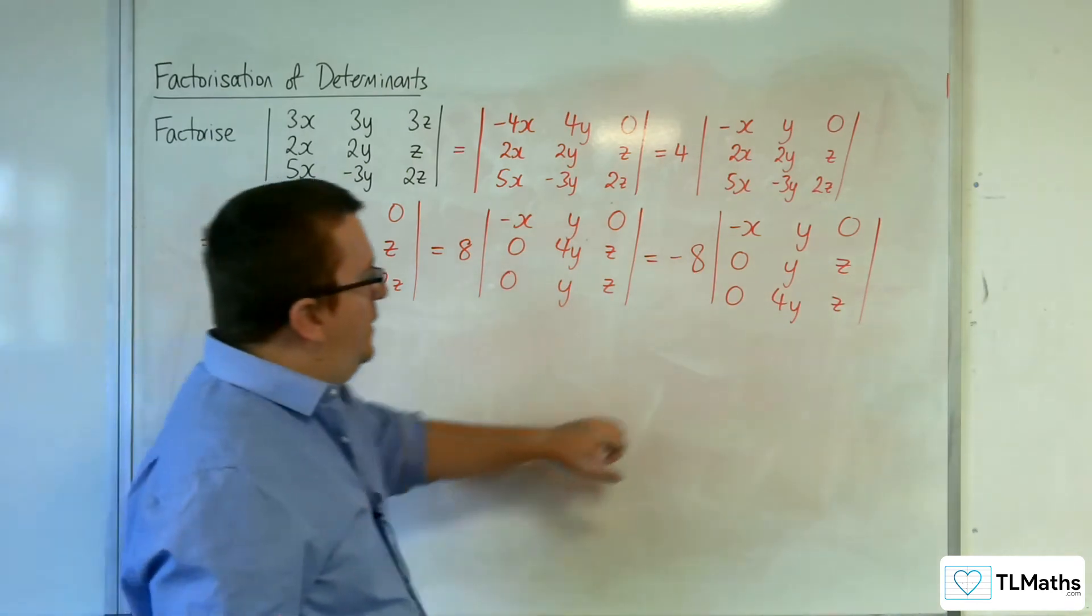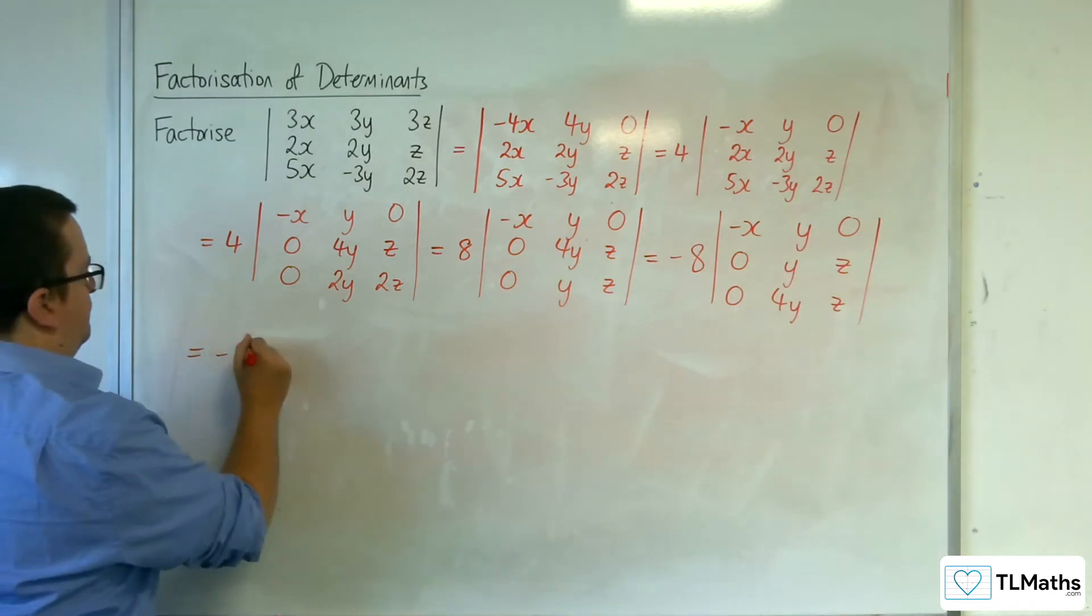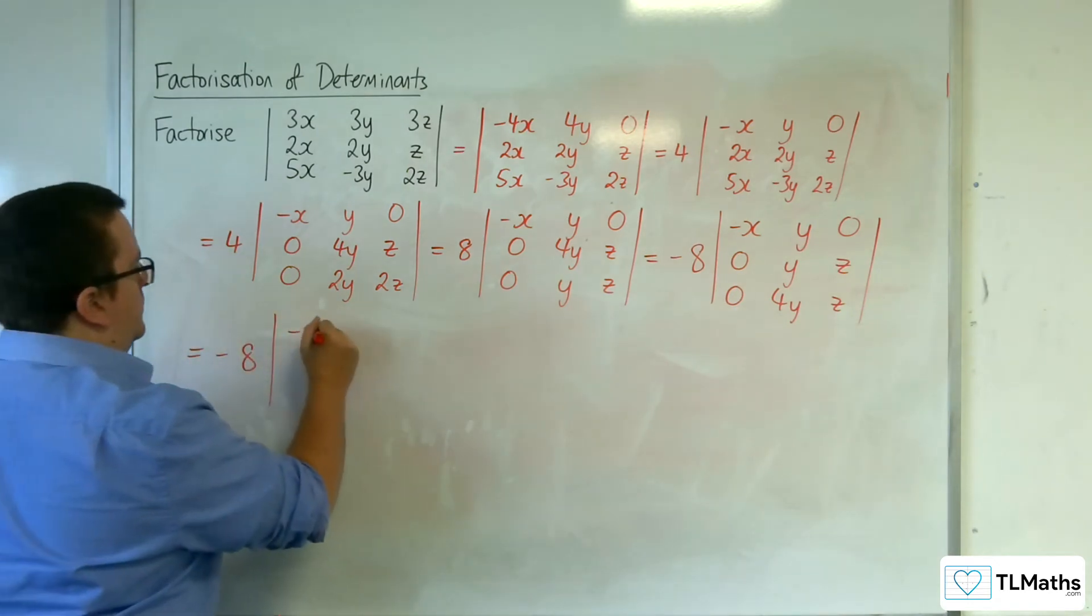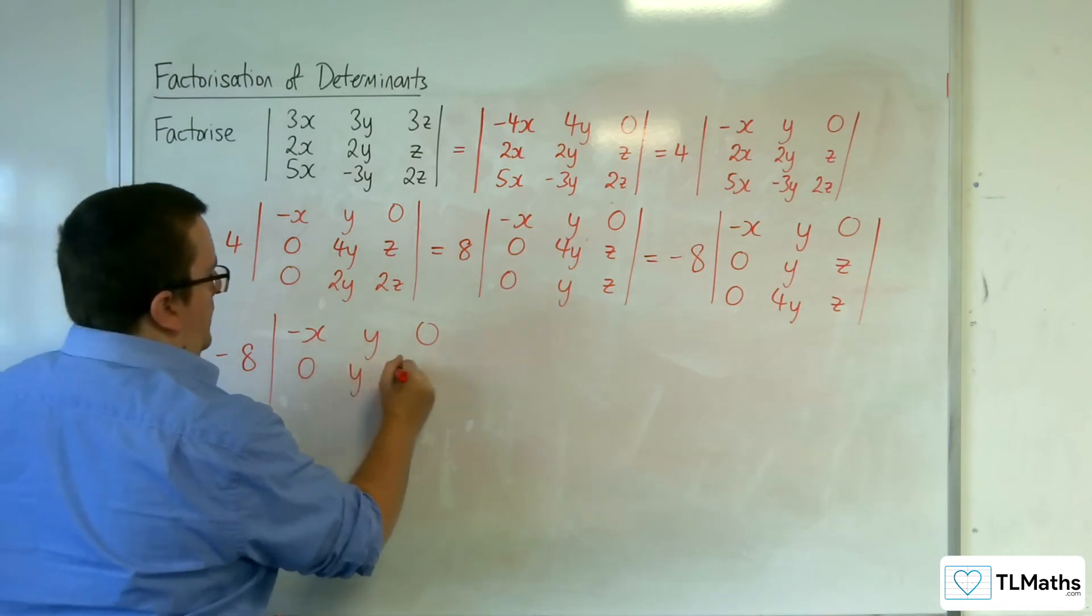Okay, so now if I do row 3 take away four lots of row 2. So I'm going to have the 0, y, z.